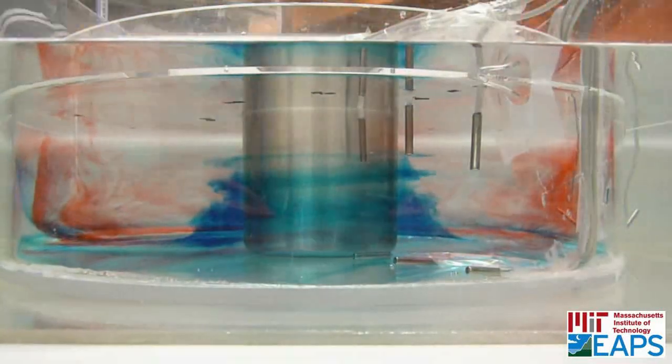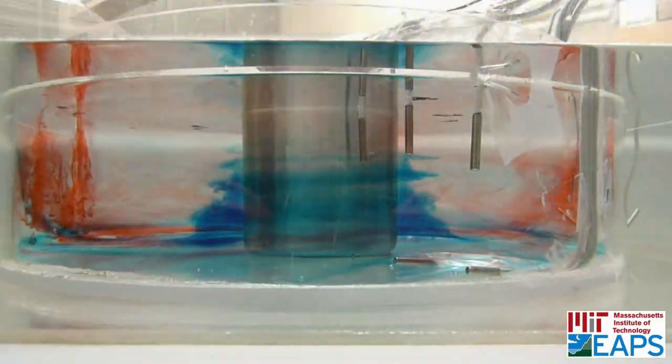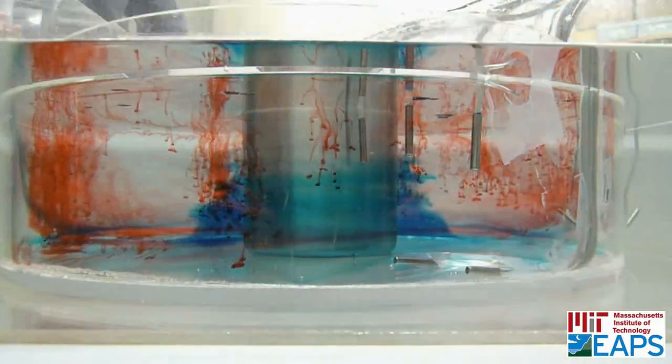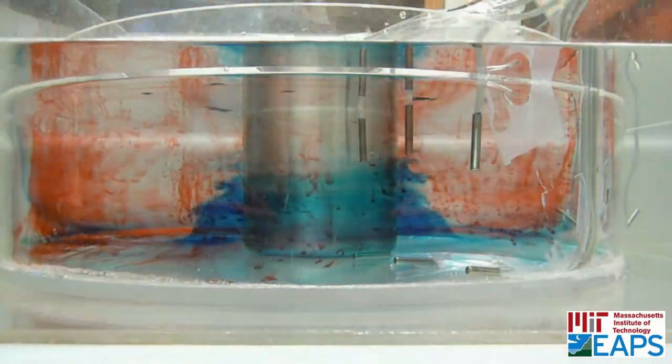You can see that around the middle, there is virtually a level of no motion where there is very little motion. Now, as we inject dye again, you can see this shear again.